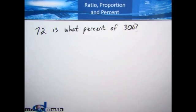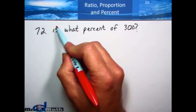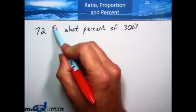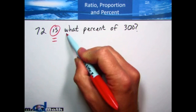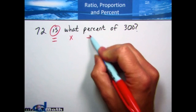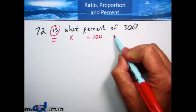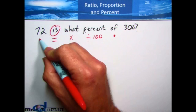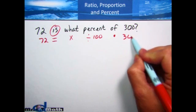Here's our first one: 72 is what percent of 300? Let's find out what we've got here and define each of these words in terms of math. 'Is' means equal to, 'what' is going to be my x, 'percent' means divide by 100, 'of' means multiply, and then I have 72 and 300.